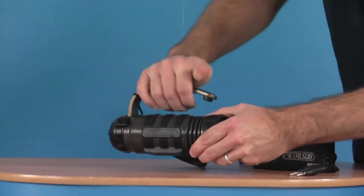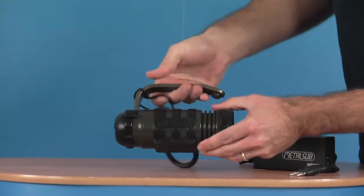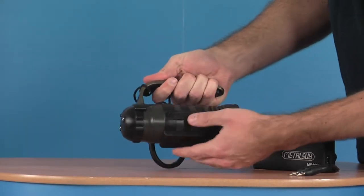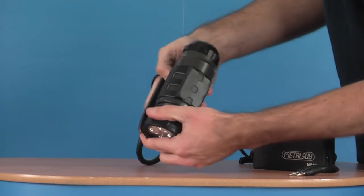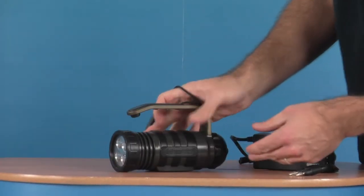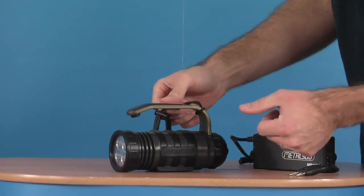The torch itself, standard handle on top, very robustly made. We have a look underneath, you see you've got this little flat area so if you put it down it's not likely to roll off.